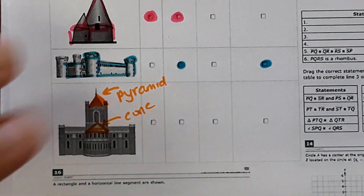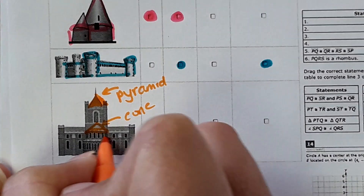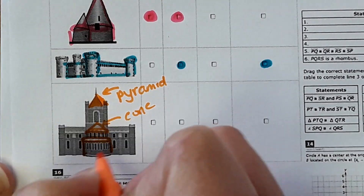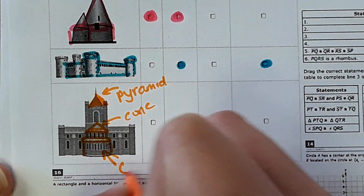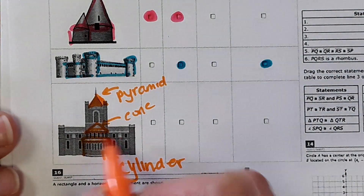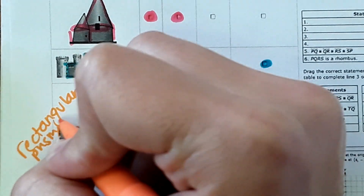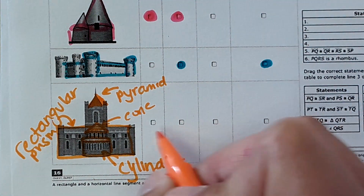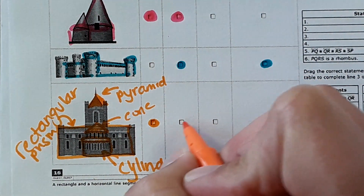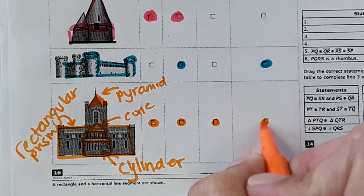This right here is actually a cylinder, and then the rectangular part of the building would be a rectangular prism. So in this case it has a cone, a cylinder, a pyramid, and a rectangular prism.